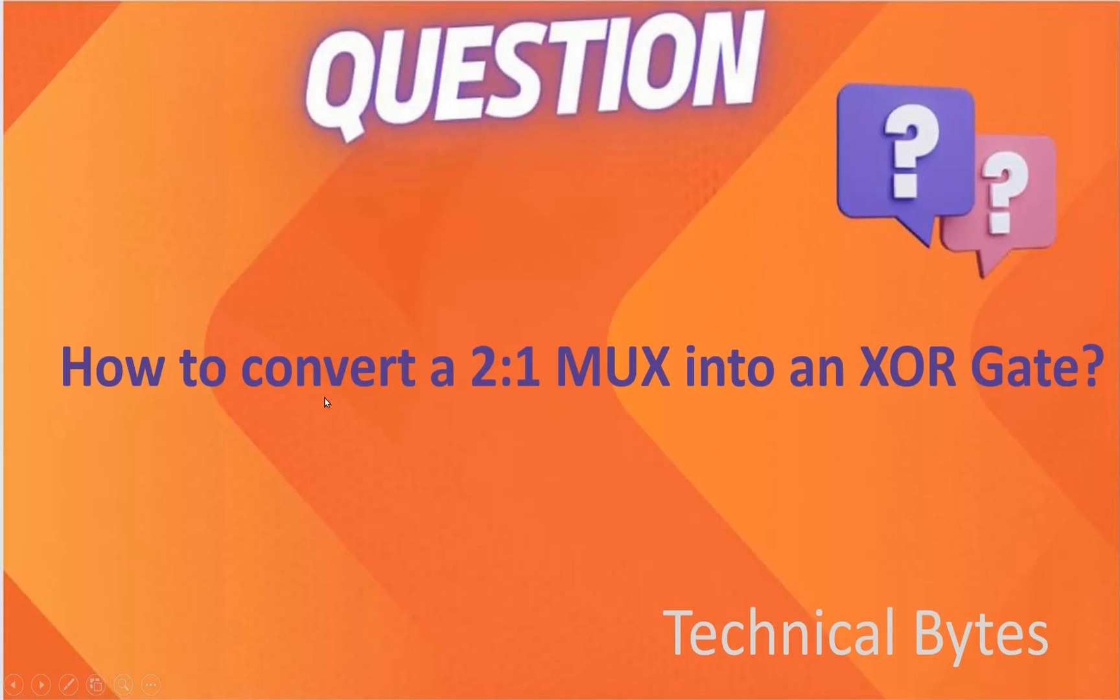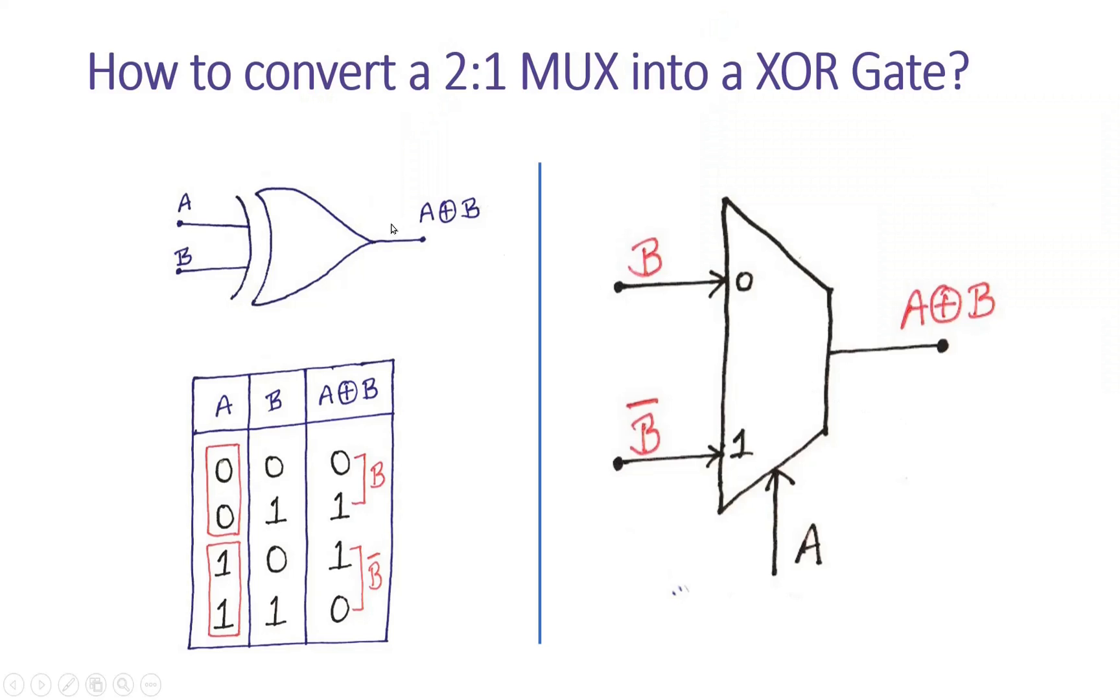The question is how to convert a 2-to-1 multiplexer into an XOR gate. Let me reveal its solution. This is the symbol of an XOR gate; it has two inputs A and B.